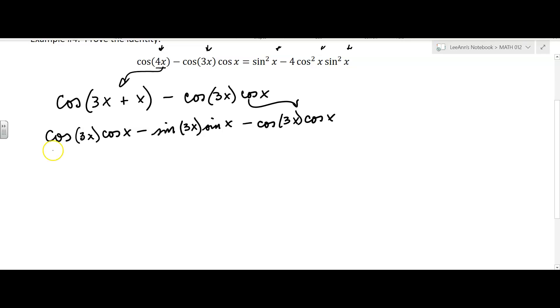Alright, so good news here, the cosine 3x cosine x, that cancels out with the negative cosine 3x cosine x, so yay. So now we just have minus sine 3x sine x.